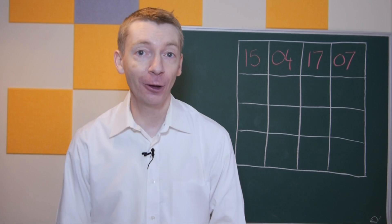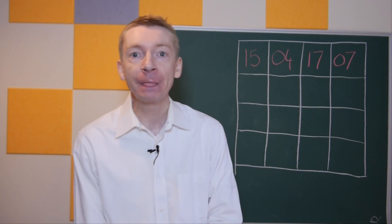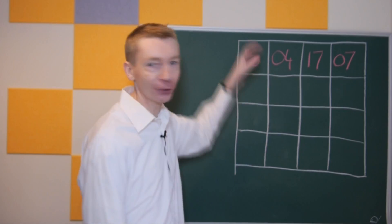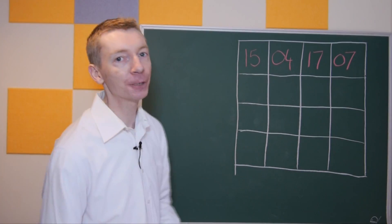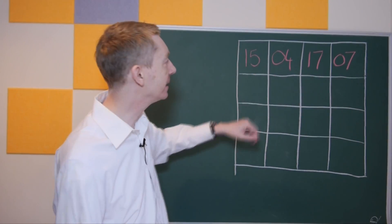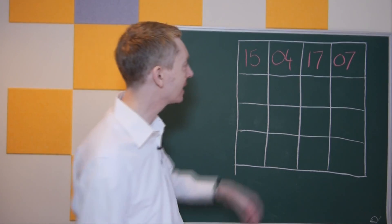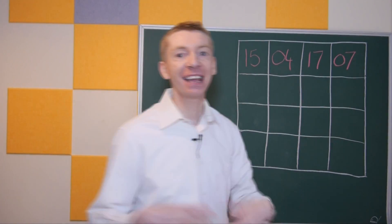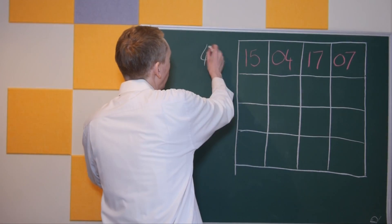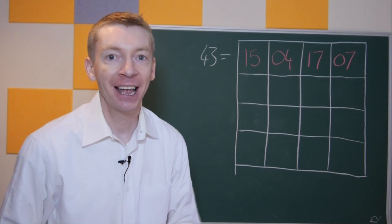What you might not know is that your birth date adds up to your special magic birthday number. If I do this for Leonard Euler's birth date: 15 plus 4 is 19, plus 17 is 36, plus 7 is 43. So 43 is Euler's special birthday number.